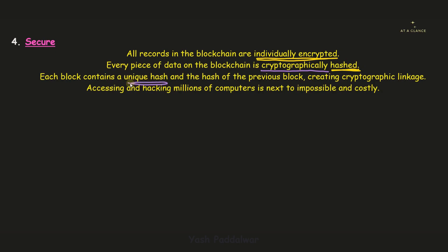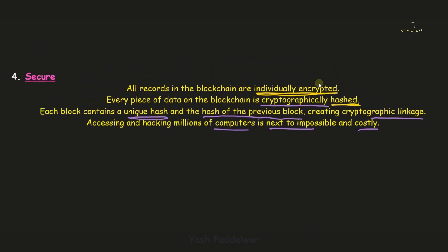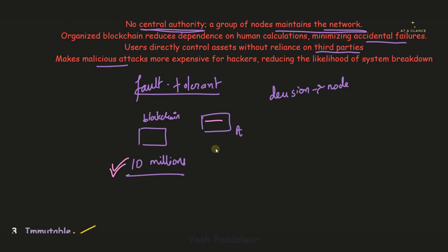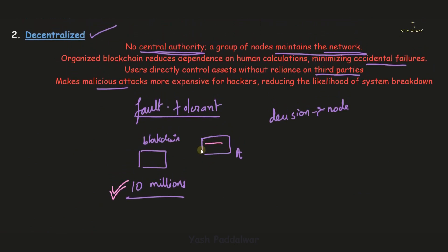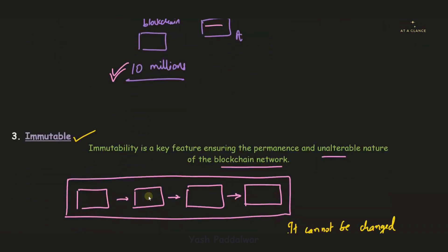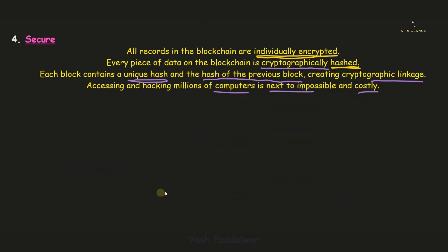Each block contains a unique hash, and whenever a block is created it is given a nonce. The previous block's hash is also stored in the current block, creating a cryptographic linkage — so even a slight change will be tracked and automatically resolved. Accessing and hacking millions of computers is next to impossible and costly. If a hacker wants to make even a small change, every single node's ledger in the blockchain network would have to be changed, which is computationally unaffordable.